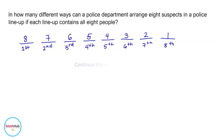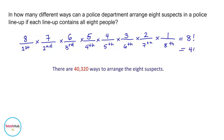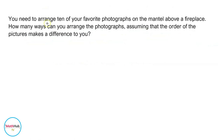To get the number of different ways to line up the suspects, we apply the fundamental counting principle and multiply each of these values. This is the same as eight factorial, which is equal to 40,320.